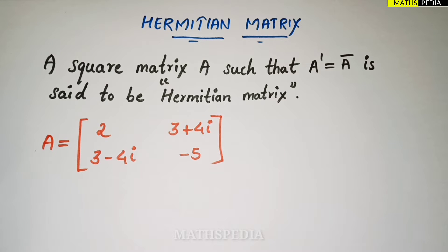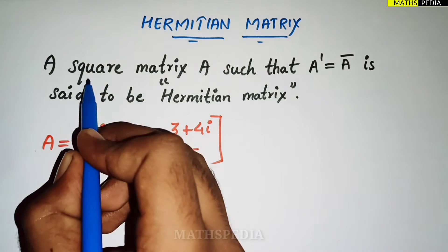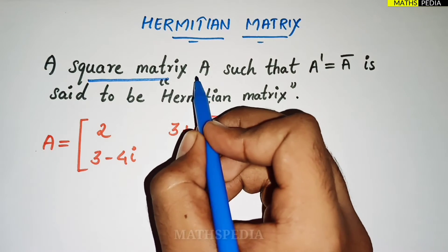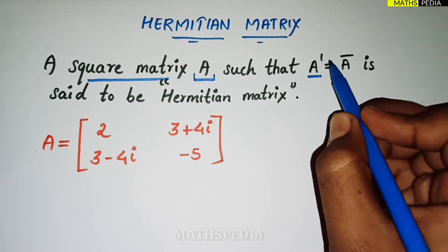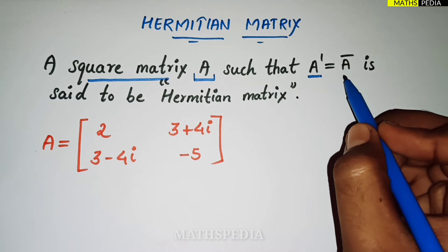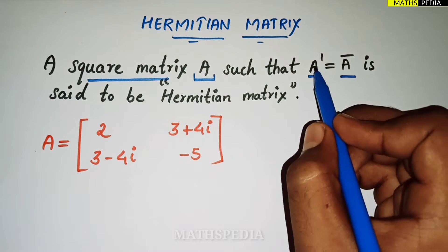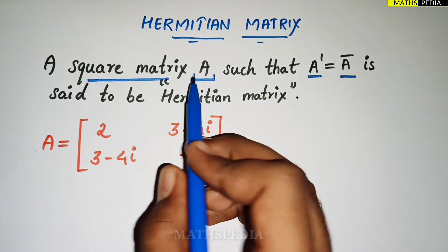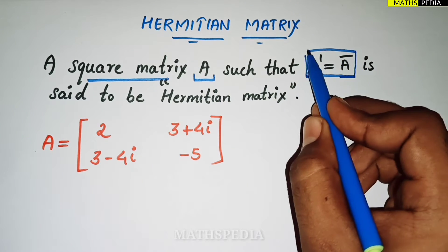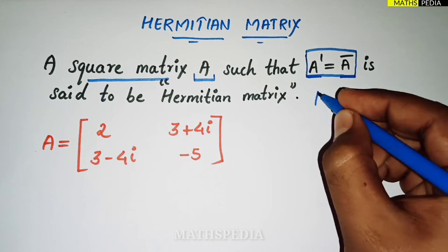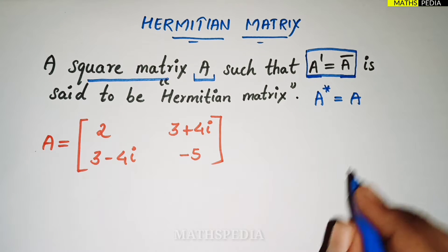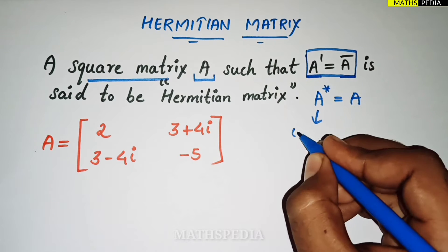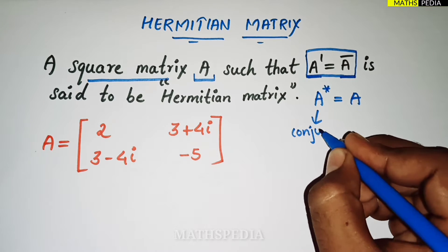In this video we'll learn about Hermitian matrix. A Hermitian matrix is a square matrix such that A transpose should be equal to A conjugate. This condition should be satisfied, or equivalently, A star should be equal to A.